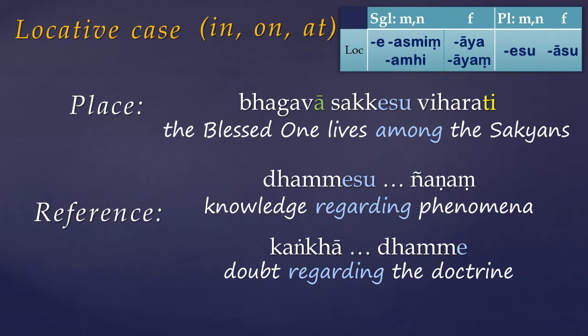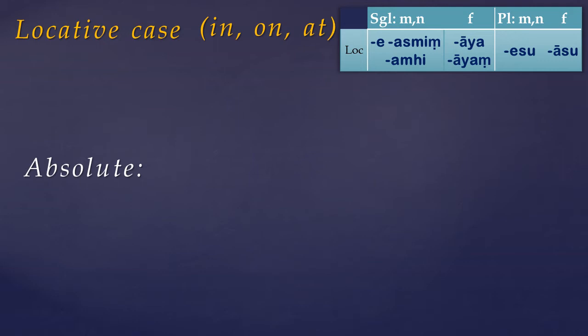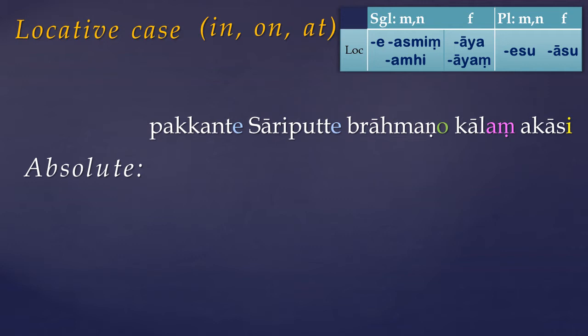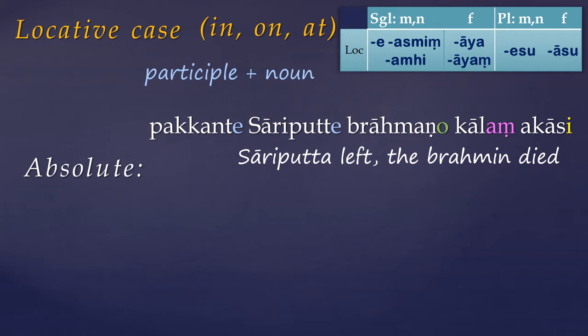It's worth highlighting that, also like the genitive, the locative case is often used in an absolute construction, or the locative absolute. This shouldn't be confused with the absolutive verb inflection. The absolute construction is when a participle and its subject noun are in the same case — most often locative — but that subject noun is different from the subject of the finite verb in the main sentence. Here, pacante is the past participle meaning 'left', and both it and its subject Sariputa are in the locative singular, whereas the Brahmin is the subject of the main verb. This can be seen as being similar to the locative of circumstance, in that the absolute clause provides context or circumstance for the sentence as a whole.